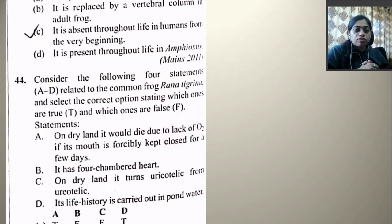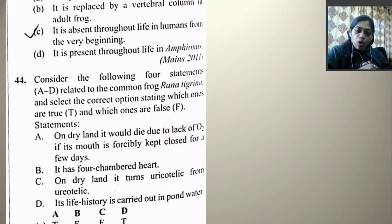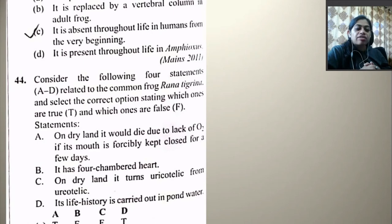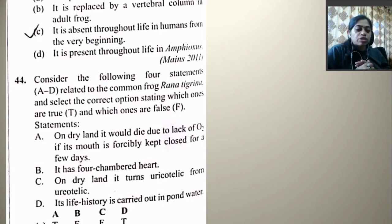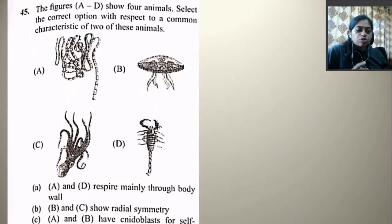Consider the following four statements A to D related to the common frog Rana tigrina and select which are true and which are false. On dry land it would die due to lack of oxygen if its mouth is kept forcibly closed — false. It has a two-chambered heart — false, it has three chambers. On dry land it turns uricotelic from ureotelic — false. Its life history is carried out in pond water — false. All four are false.